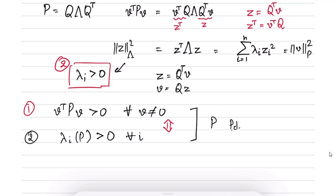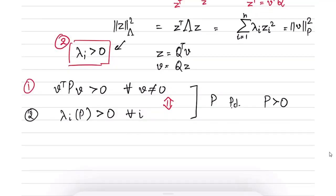If either property holds, we say matrix P is positive definite, and the notation is P > 0. Whenever we write P > 0, we mean it is a positive definite matrix — this does not apply entry-wise. We do not mean the entries of P are greater than zero; we mean the eigenvalues of P are greater than zero.